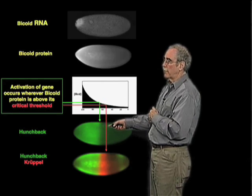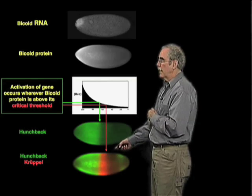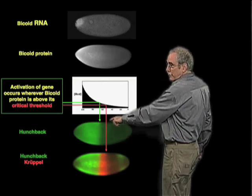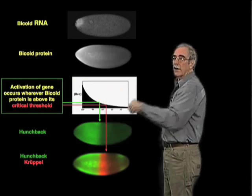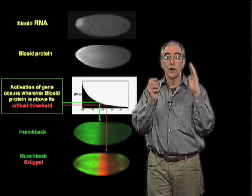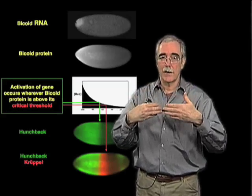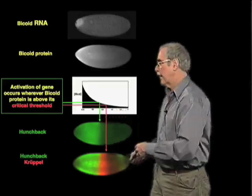There are other genes which can be activated by lower thresholds, for example, the krüppel gene, shown here. The krüppel gene and the hunchback gene define domains of gene expression and are involved in establishing those spatial patterns in the embryo.